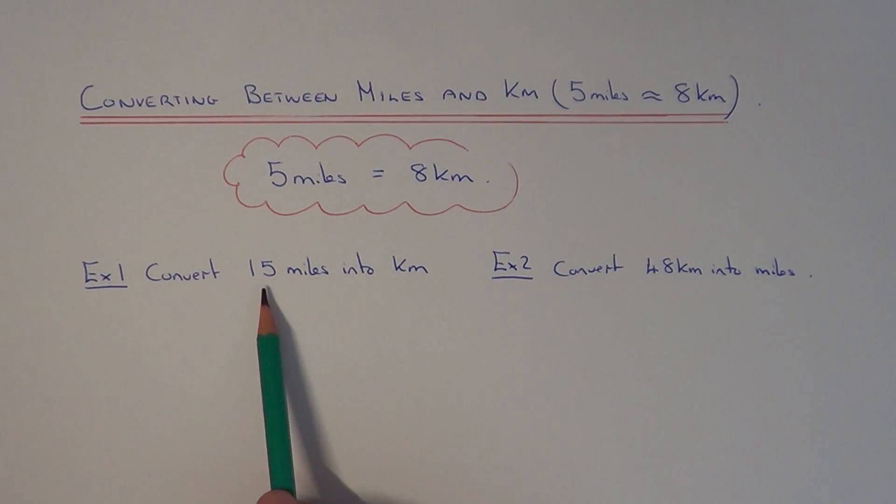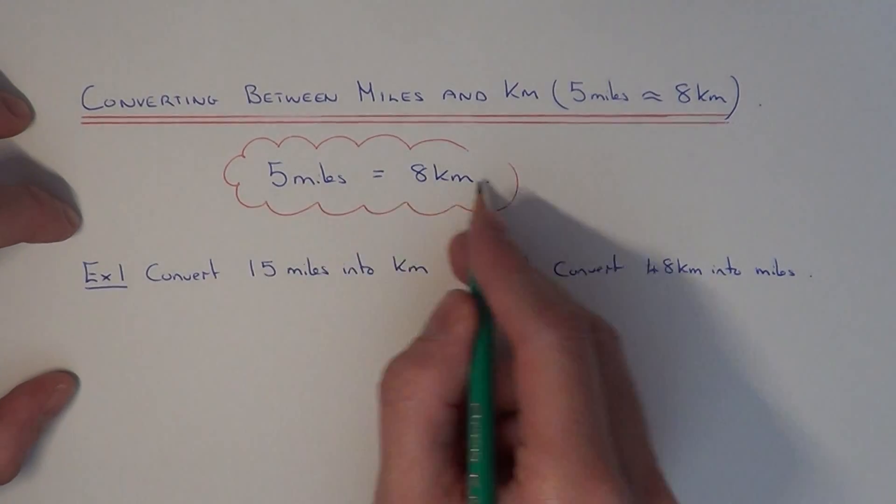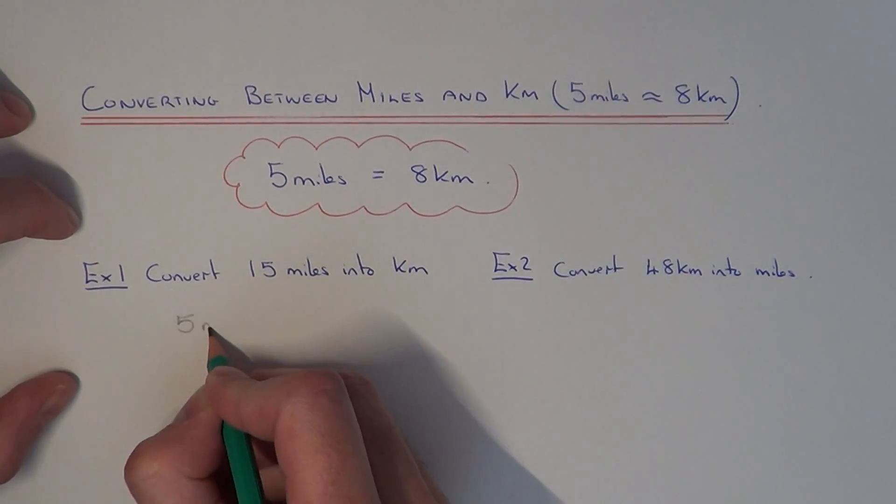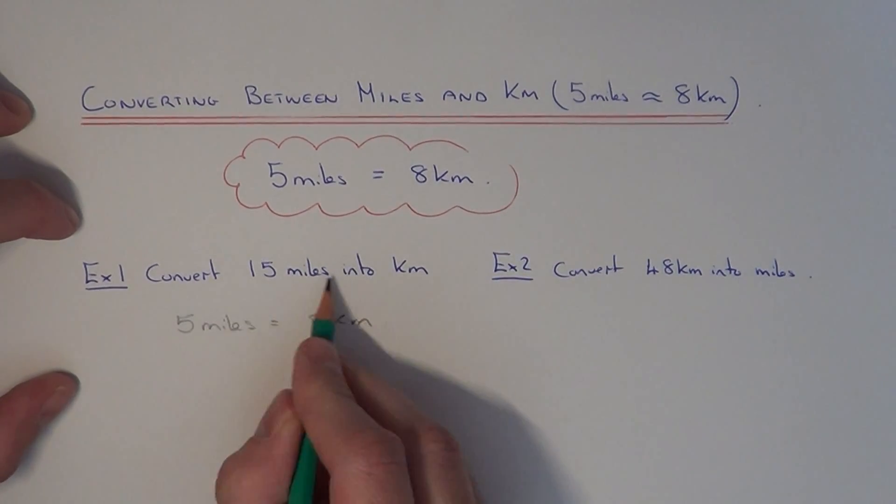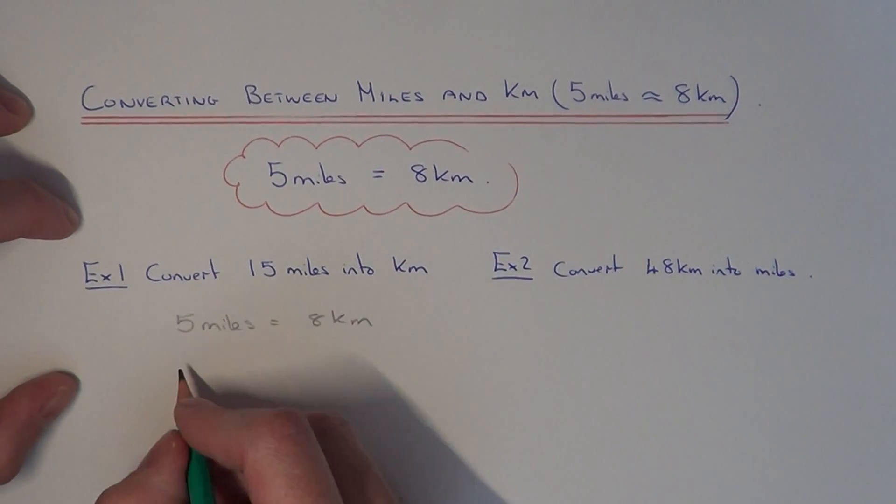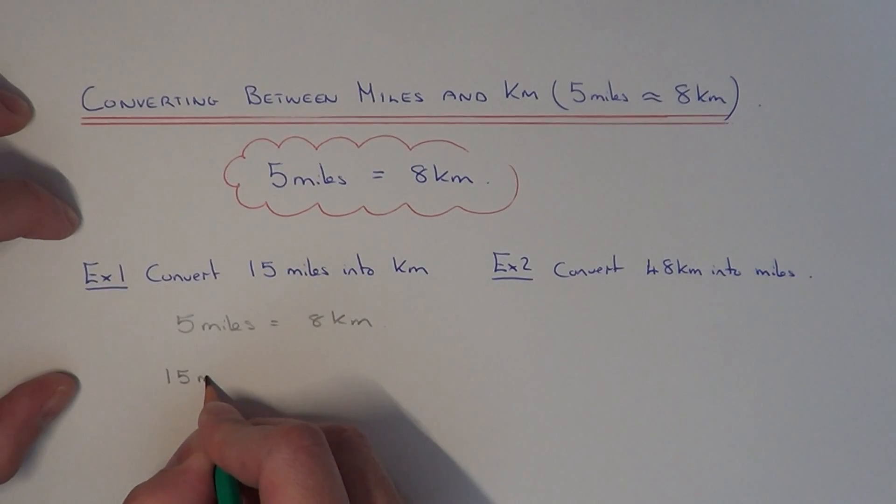Let's have a look at example one. We need to convert 15 miles into kilometers. Let me just write down the conversion above: 5 miles equals 8 kilometers, and we're trying to convert 15 miles into kilometers.